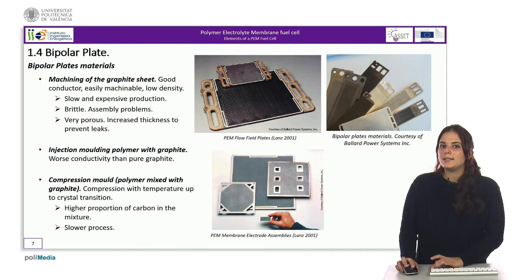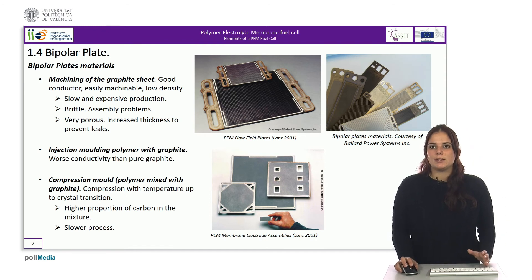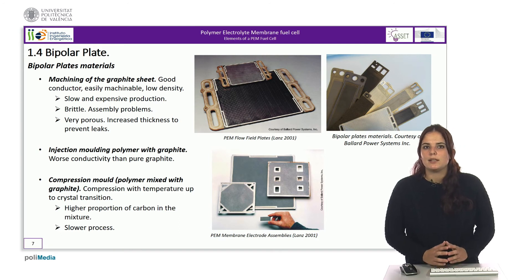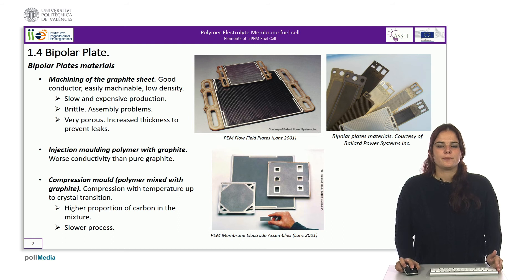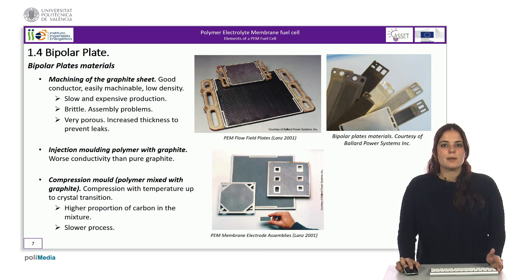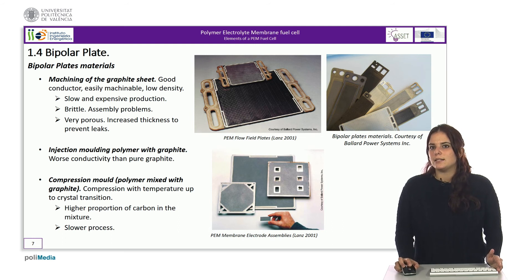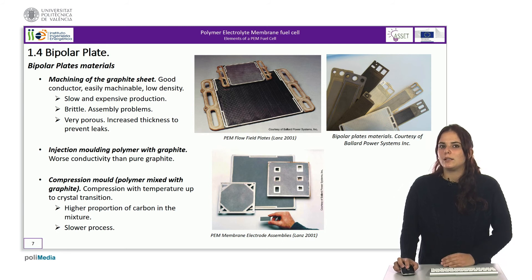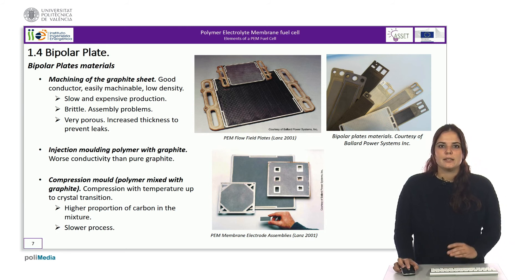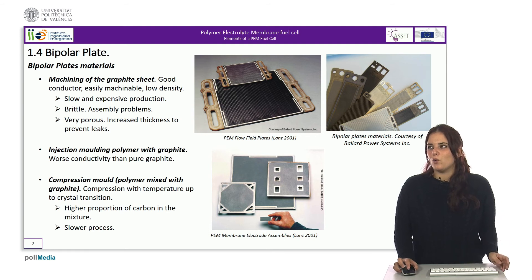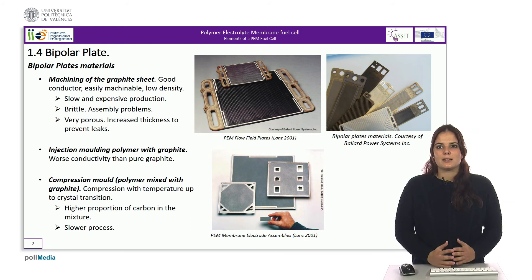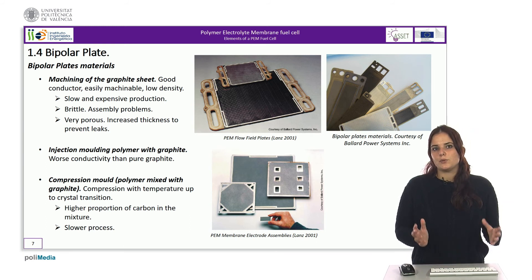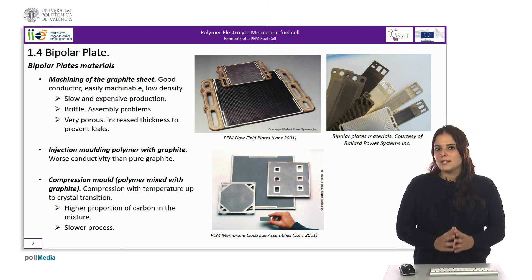Bipolar plates must be corrosion resistant, able to withstand contact with acid in the electrolyte in a hot and humid environment. They must also be impermeable to gases and must have very good electrical conductivity. They should be as thin as possible, as light as possible, and have low cost. Currently there are not many materials that can meet all these requirements; one of them is graphite.